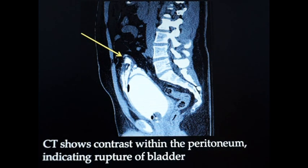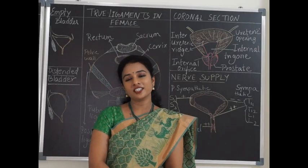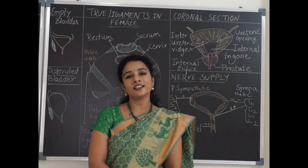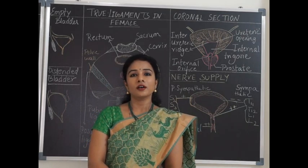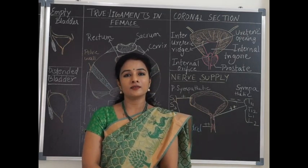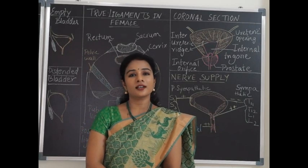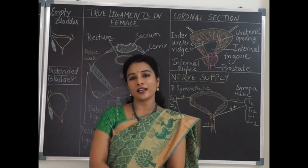This is a contrast CT where intraperitoneal fluid accumulation was observed in the abdomen. This represents a rupture of the urinary bladder. The probable structure involved in the case is the urinary bladder. So now we understand that the anatomy of the urinary bladder is very important to know its clinical aspects.